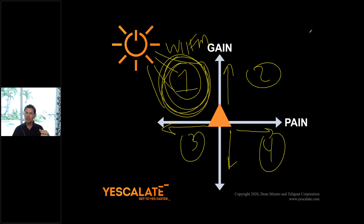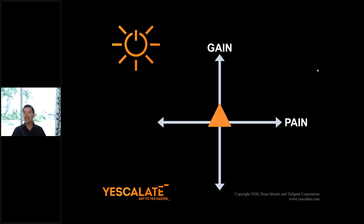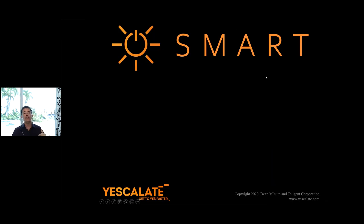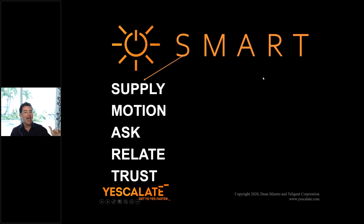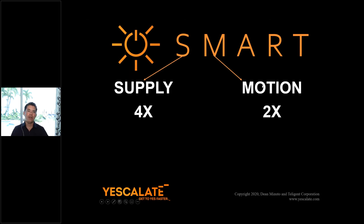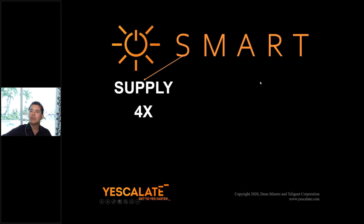Now that I've given you this GPS as a framework, I'm going to walk you through a couple of SMART behaviors that are absolutely in quadrant one. On your second sheet of paper, write out the word SMART across the top. Today I'm going to focus on two components: supply, which will increase compliance to a request by four times, and motion, which will double compliance to a request.